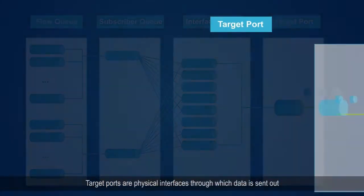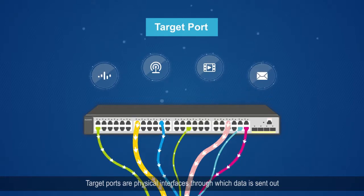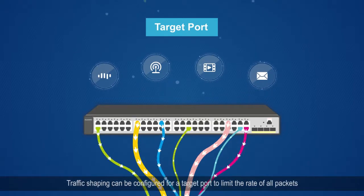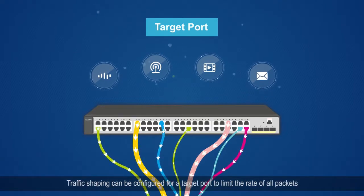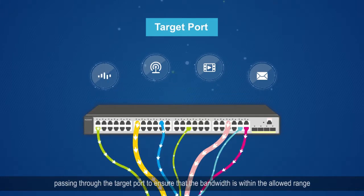Target ports are physical interfaces through which data is sent out. Traffic shaping can be configured for a target port to limit the rate of all packets passing through the target port to ensure that the bandwidth is within the allowed range.